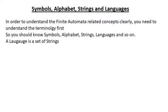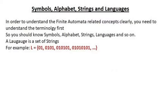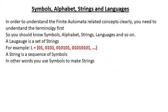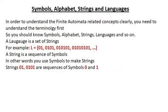A language is a set of strings. For example, language L has strings 01, 0101, 010101, and so on. Each of these strings is a sequence of symbols. In other words, you use symbols to make strings. Strings like 01 and 0101 are sequences of symbols 0 and 1.